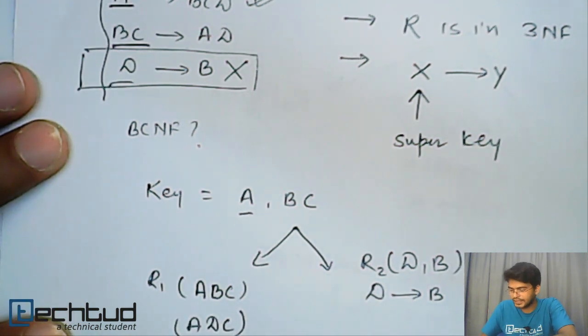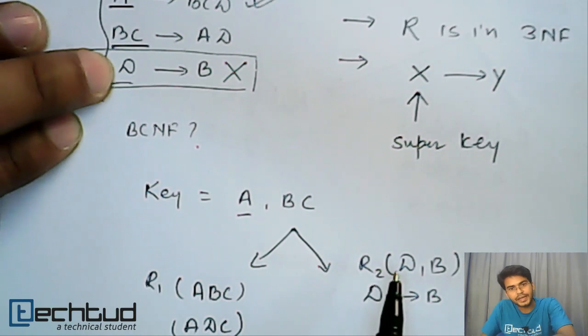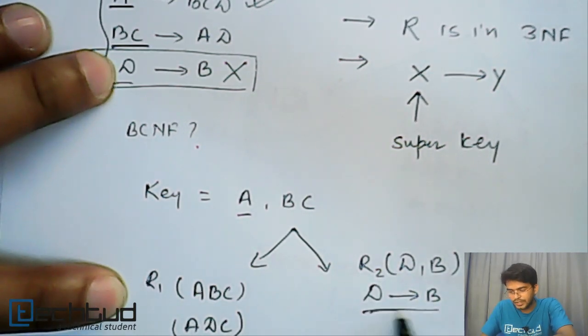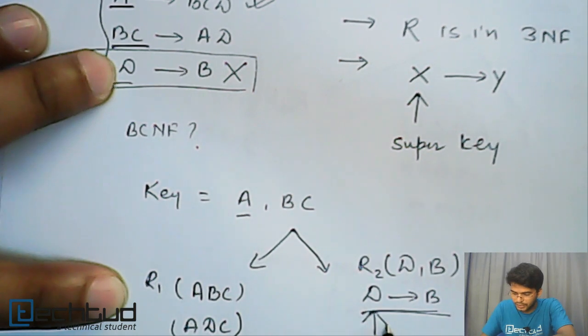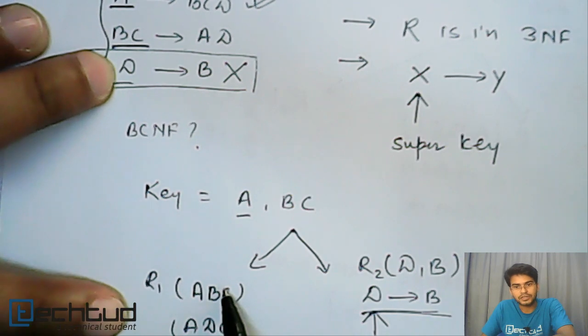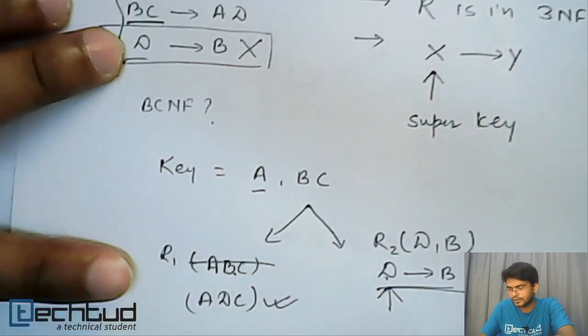So as we already studied, in this functional dependency D can determine B. So here D is determining B, so D is a primary key. This primary key should be referred from the R1 relationship as foreign key. So this D should be here, not B. So this is correct, this is wrong.